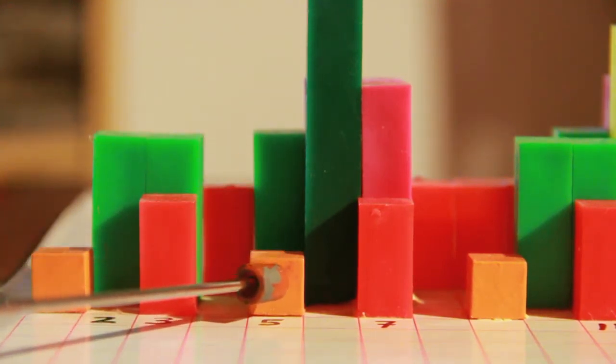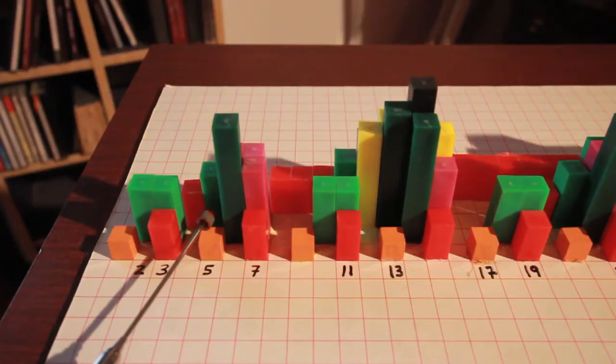All cubes are orange while columns have different colors and heights. For example, five is represented by a cube followed by an empty space and a green column.